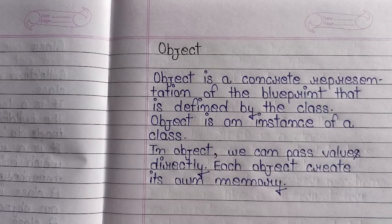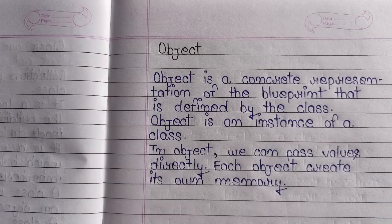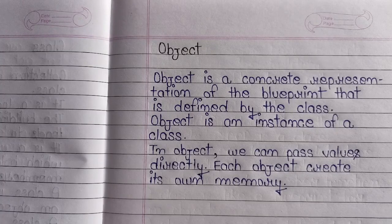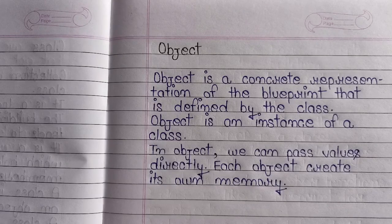Object class का instance होता है. अगर आपको class के data member या फिर member function को access करना है, तो आपको object declare करना होगा. जब हम main function में object को create करते हैं class के लिए, तो हमें किसी भी keyword की जरुरत नहीं होती. आप object बिना keyword के लिखते हो.